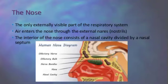Regarding external features, the nose is composed of a triangular framework of bone and cartilage covered by skin. On the inner side of the nose, there are two oval-shaped openings called nostrils.